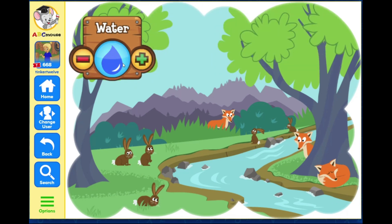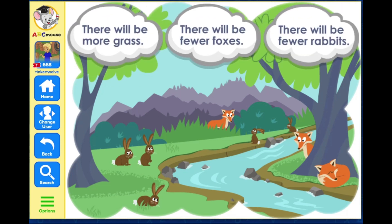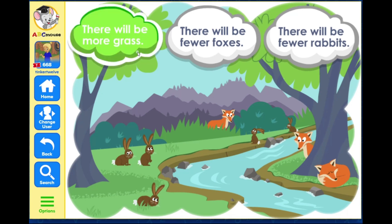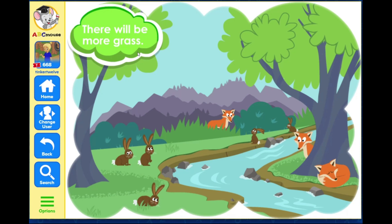Now select how to change it. What will happen if you add more water to the ecosystem? Select what you think will happen. There will be more grass. Water helps grass to grow, so if there is more water, there will be more grass.